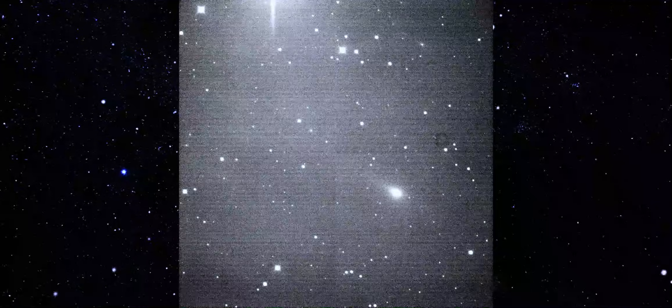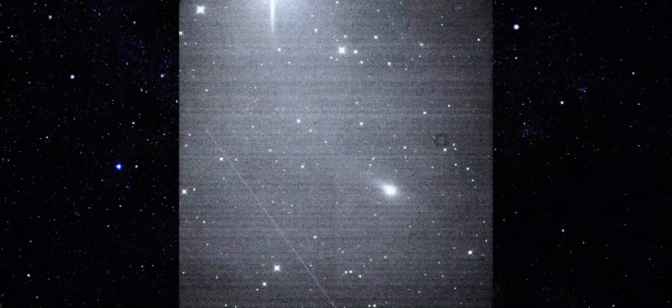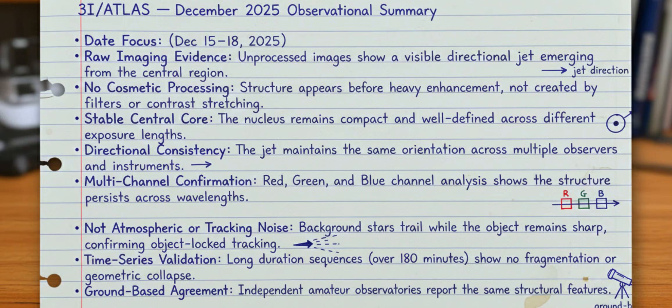Let's slow this down and look at what the mid-December data is actually telling us. Across observations taken between December 15th and 18th, the same feature keeps appearing. Not after heavy enhancement, not after aggressive processing, right there in the raw frames. A directional jet emerging straight from the central region. What matters isn't just that the jet exists, it's that it appears before any cosmetic processing is applied. That alone rules out filters, contrast stretching, or post-processing artifacts.